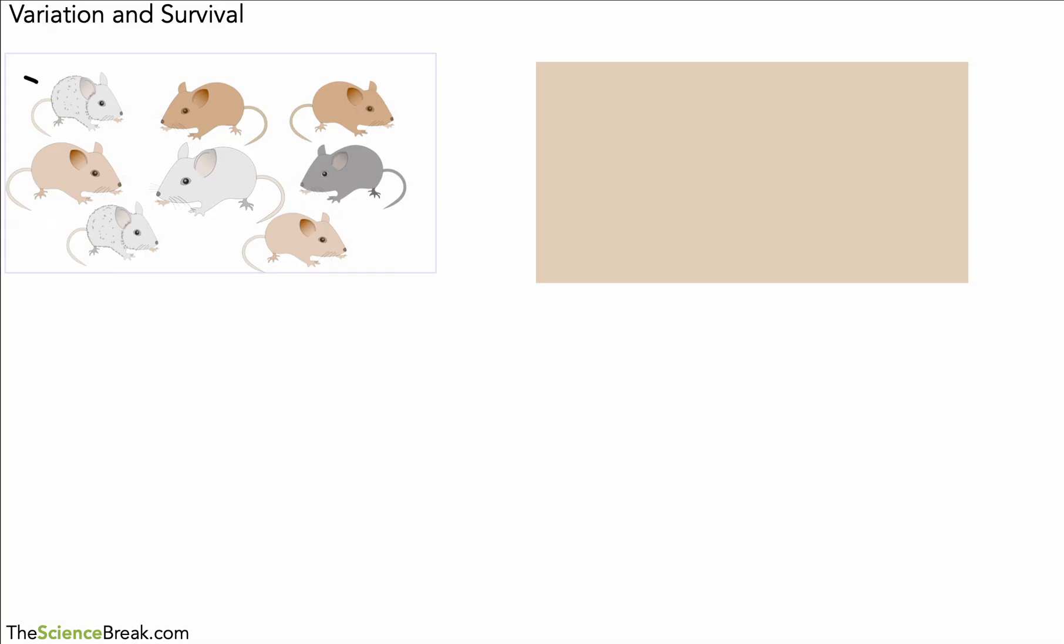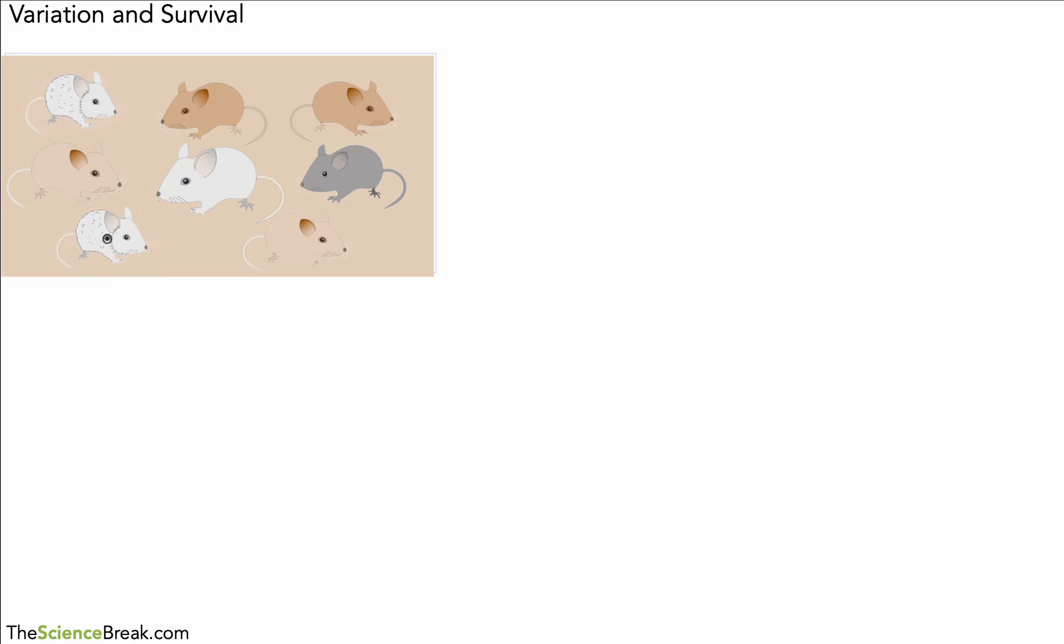However, if the environment was slightly different or was to change, so we now have this kind of color background, you can see that this mouse here now is less likely to be able to survive because it's less well camouflaged, might get eaten. Same with this mouse, same with this mouse. These two mice here certainly are much better camouflaged, they're more likely to survive, maybe these ones as well because they're slightly brown, slightly match the environment. Perhaps in a new population, as the generations go by, we might have more mice of this slightly lighter brown color.